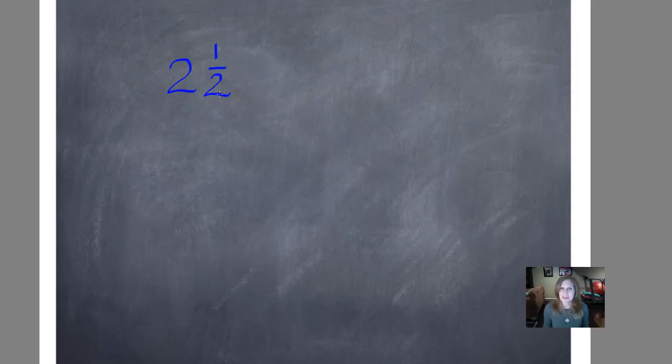To convert it to an improper fraction, we do something called working in a circle. We start with our denominator, two, and we multiply that times our whole number. I'm a little rusty at the bamboo tablet, let's try that again.